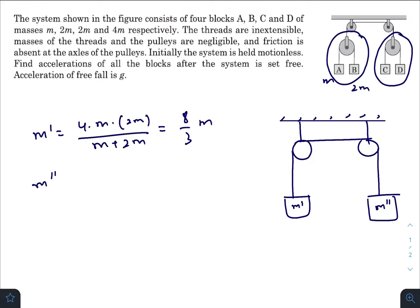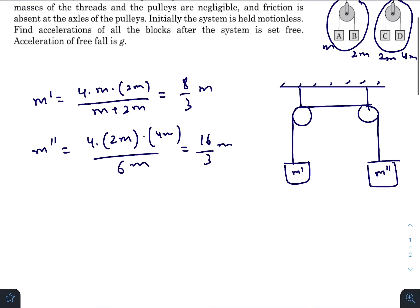Whereas m double prime will be, this is 2m, this is 4m, 2m times 4m divided by 6m, so it will give you 16 by 3m.